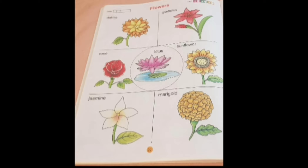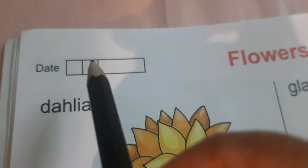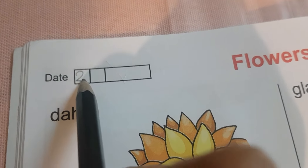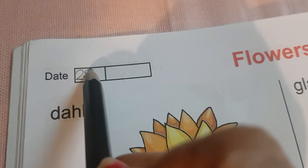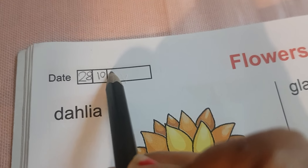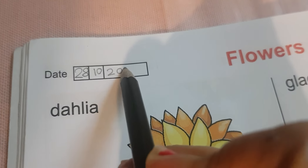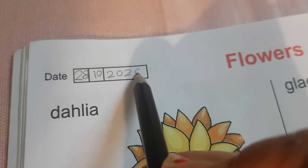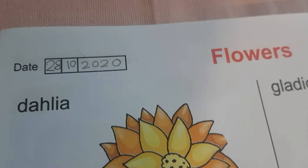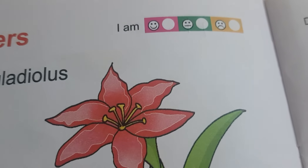Kids, all of you open page number 22 of your picture reading book. What is the date today? Today is 28 October 2020 and the day is Wednesday. How are you feeling today?